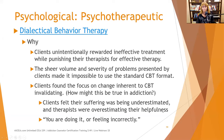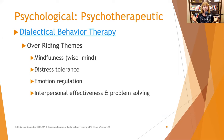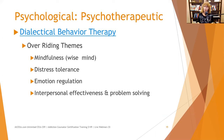The overriding themes in DBT are mindfulness — using the wise mind, getting out of the emotional reactive mind — distress tolerance (because sometimes life is unpleasant and you can't make it stop), emotion regulation, and interpersonal effectiveness and problem solving. Many people with emotional dysregulation also struggle with interpersonal relationships and need more interpersonal effectiveness skills taught alongside emotion regulation and distress tolerance.